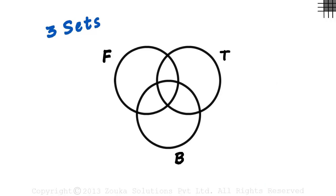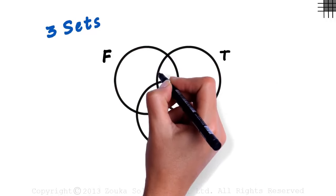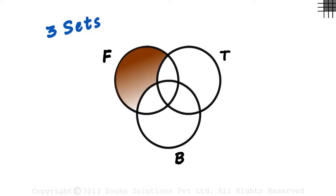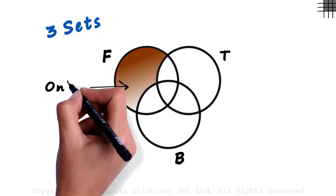Let me give you an example. Look at this colored region. It does not contain anything from set T or set B. So this region shows the students who play only football.